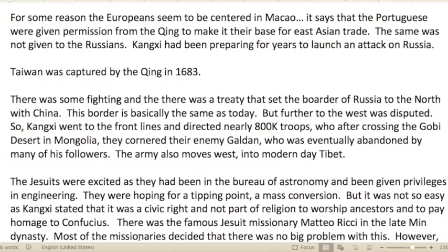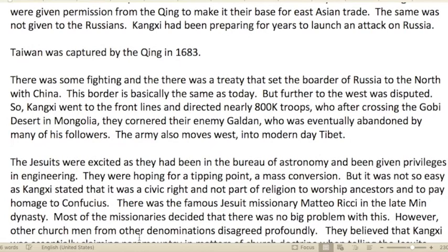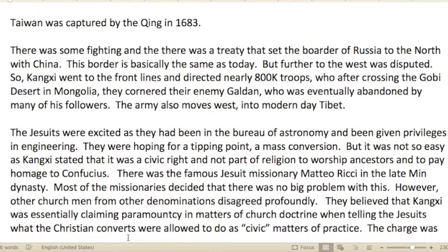For some reason Europeans were centered in Macau — the Portuguese were given permission from the Qing to make it their base for East Asian trade. The same was not given to the Russians, and Kangxi had been preparing for years to launch an attack on Russia. Taiwan was captured by the Qing in 1683. The book 'China: A Fragile Superpower' spends considerable time discussing a potential war between the United States and China over a dispute around Taiwan, Japan, or North Korea.